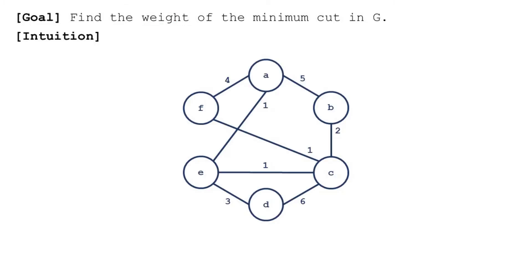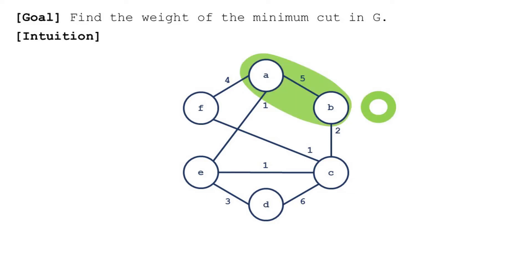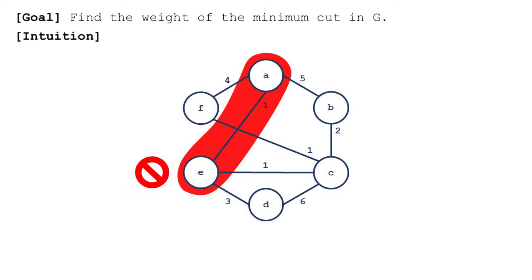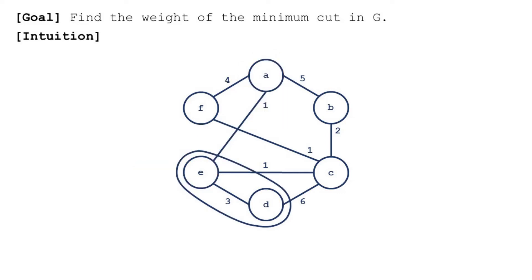First, some intuition for finding the cut. Suppose we start with a set containing an arbitrary vertex, say A. We want to grow the set so that it eventually becomes one of the parts in the partition. Which vertices might we want to add? It seems natural to add a vertex whose edge to A has a large weight, like B. This way, the large edge wouldn't be crossing the cut. It's not a good idea to add a vertex whose edge to A has a low weight, like E.